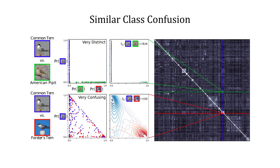Our final proposed metric is similar class confusion, which is defined at the class rather than the image level. For a pair of classes, we form the distribution over marginal probabilities for each image being predicted as one class or the other, and measure the KL divergence between the two distributions. A lower divergence indicates that the two classes are easily confused.